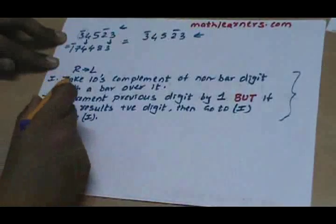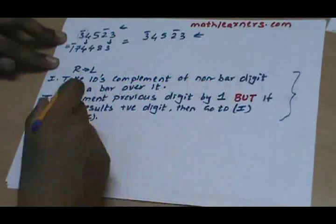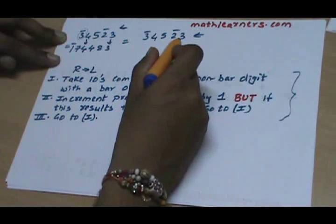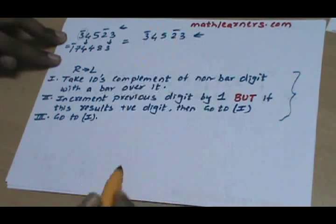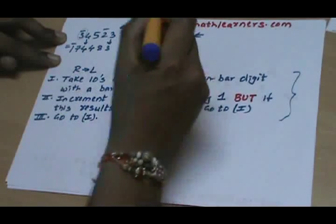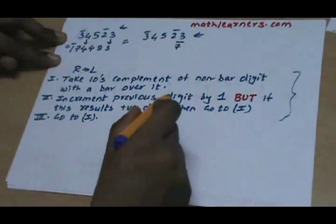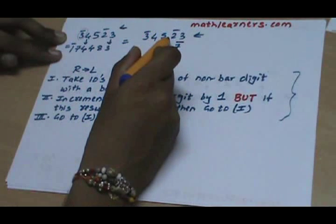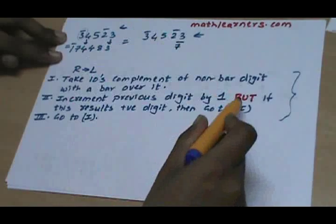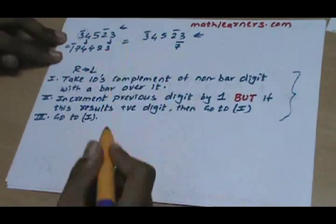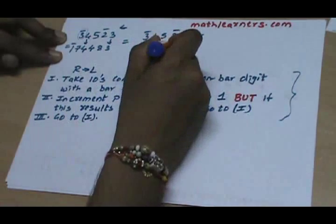Let's see that procedure using the same number again. The procedure says: go from right to left and take 10's complement of the non-bar digit. In this case 3 is the non-bar digit, so we take 10's complement of 3, which comes as 7̄. Then incrementing the previous digit by 1 gives bar 1. Since this result is not a positive digit — we got bar 1 — it can be written as bar 1.